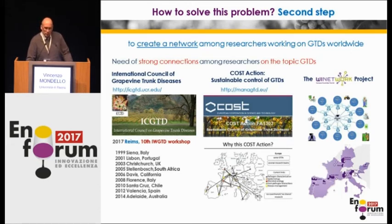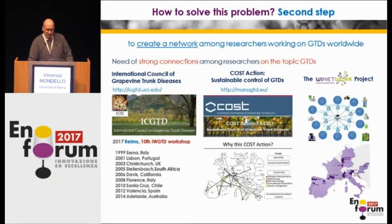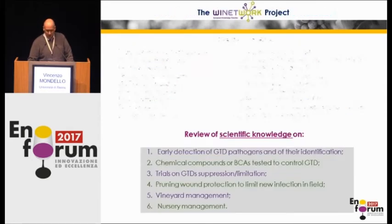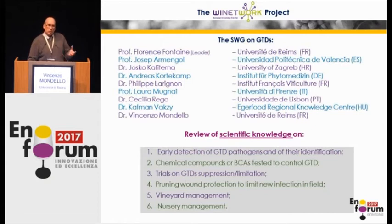Given this knowledge base, the next step was establishing a network among researchers all over the world. First, the International Council of Grapevine Trunk Diseases was set up — its 10th edition will be in Rome. Then the next step was the creation of a COST Action, which is the only one that was approved for our sector. And then the Wine Network project that you have already heard about. Now I will address the results that the scientific group produced with reference to GTDs.